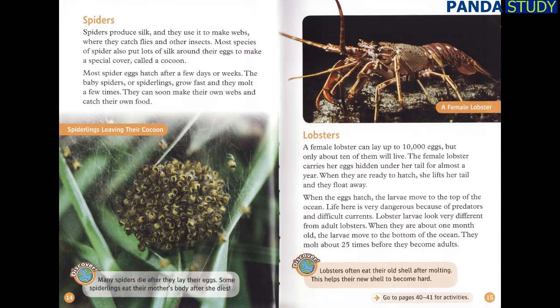Lobsters often eat their old shell after molting. This helps their new shell to become hard.